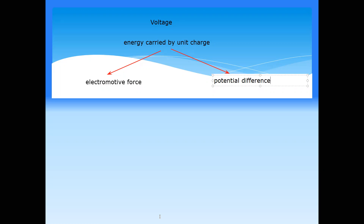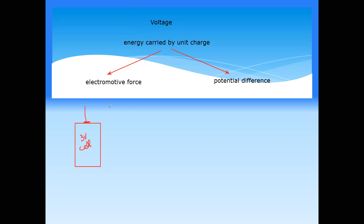What is the meaning of electromotive force, or EMF? It is the energy that the charges get from the supply. For example, inside a battery or cell, there is chemical energy. There is a chemical reaction, and on the cell it may be labeled, for example, 3V.